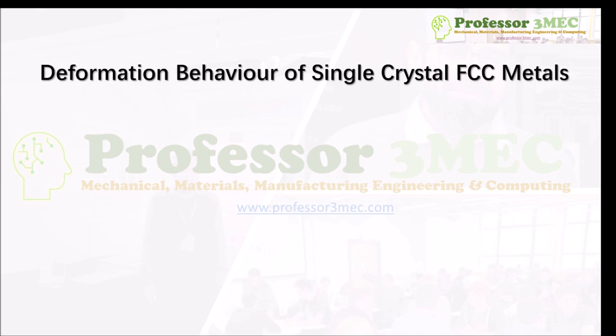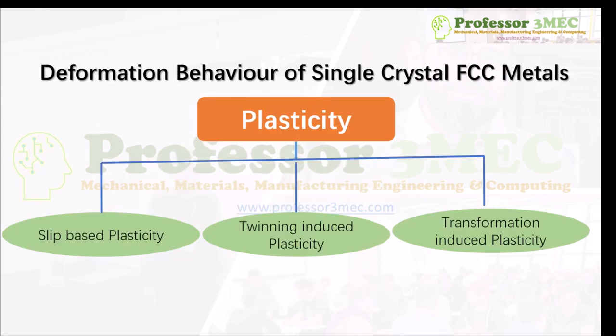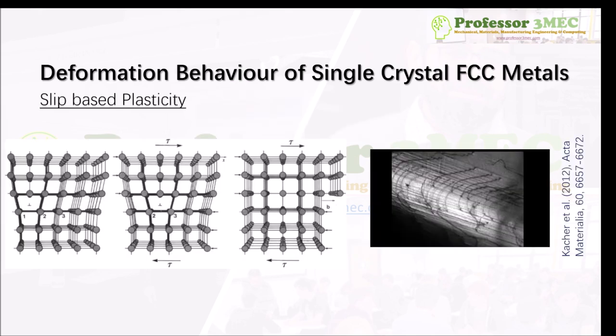When we talk about plastic deformation in metals, especially at macro scale, we mention yield strength and strain hardening. However, at micro scale or meso scale there can be a number of mechanisms which cause plasticity in the material — for example slip-based plasticity, twinning-induced plasticity (also known as TWIP), or transformation-induced plasticity (also called TRIP in the literature). Let's look at each of these mechanisms very briefly before we jump into the theoretical part.